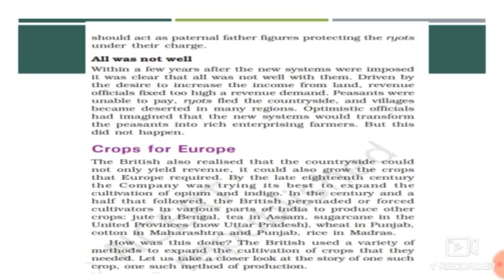The company started cultivation of all these things from different regions for Europe and was satisfied. The British used a variety of methods to expand the cultivation, using different modern technology. We are going to learn in detail how one such crop was produced and what the method of production was.